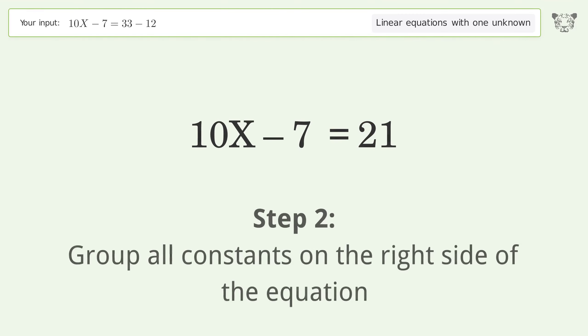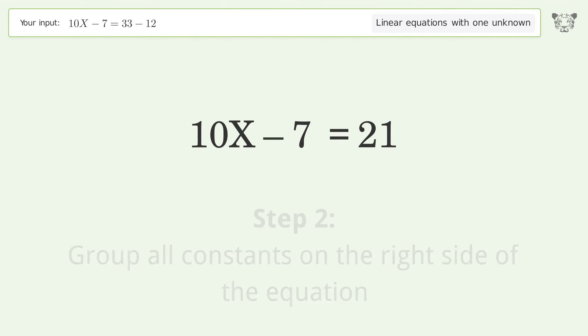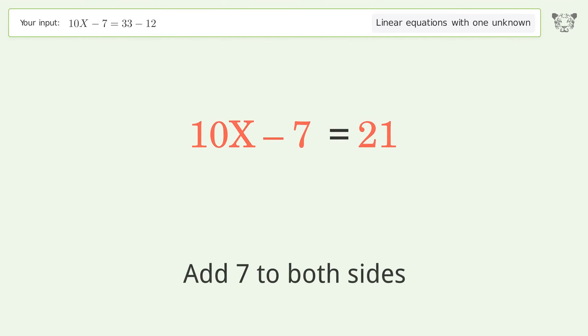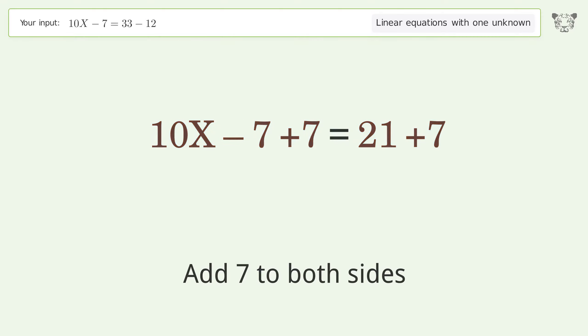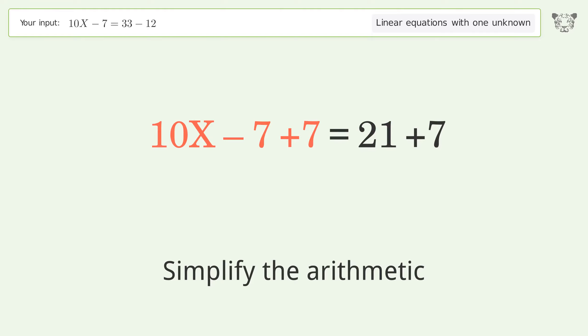Group all constants on the right side of the equation. Add 7 to both sides, then simplify the arithmetic.